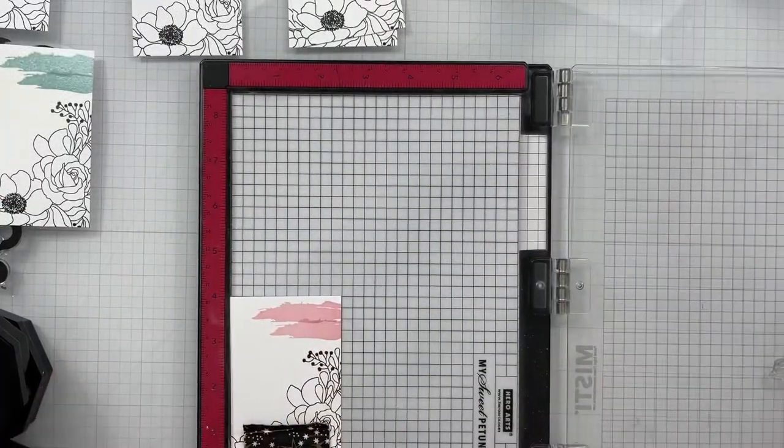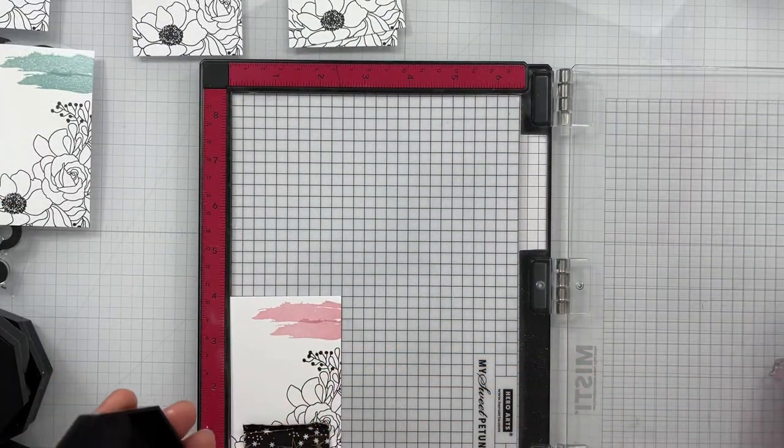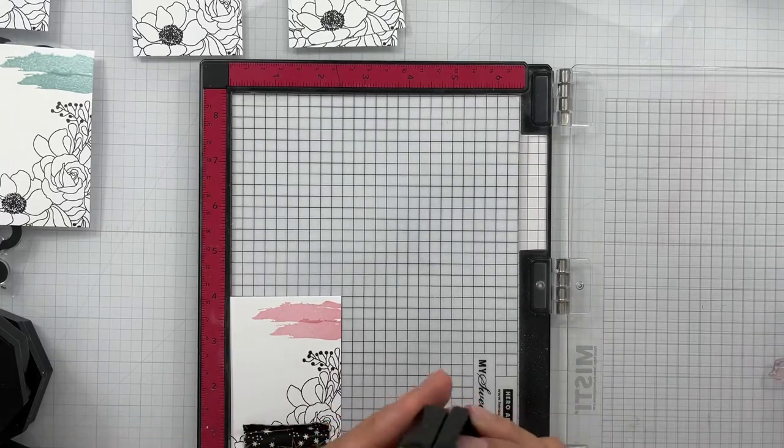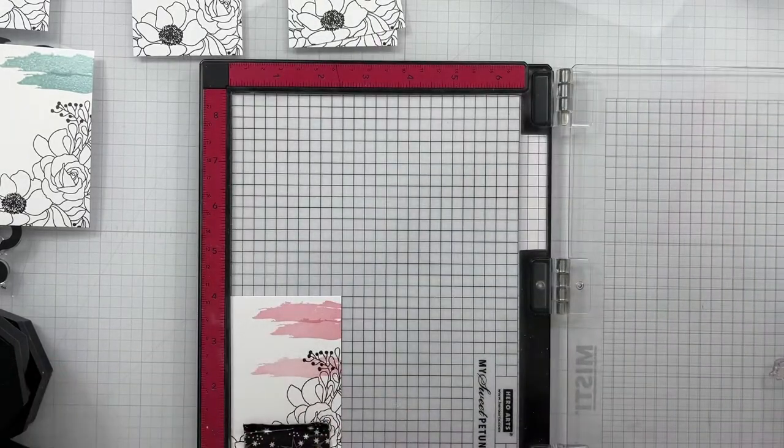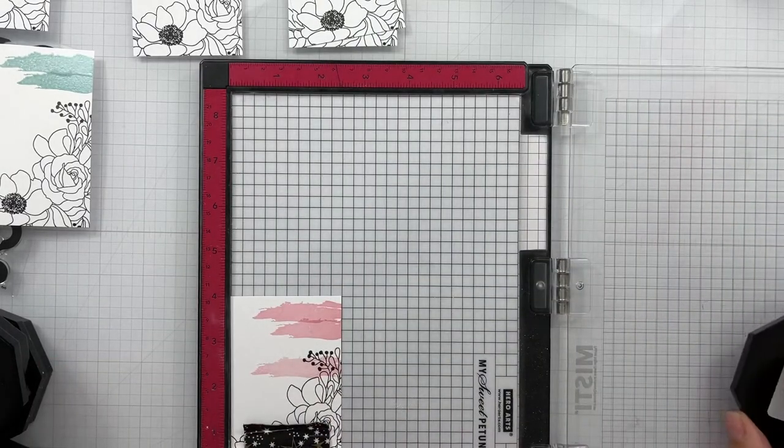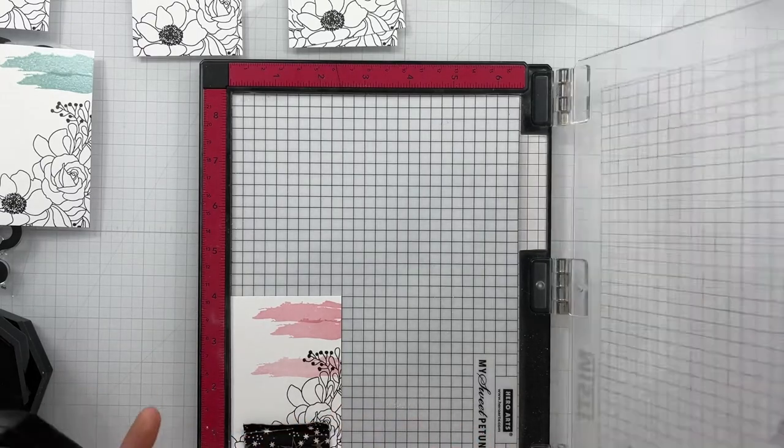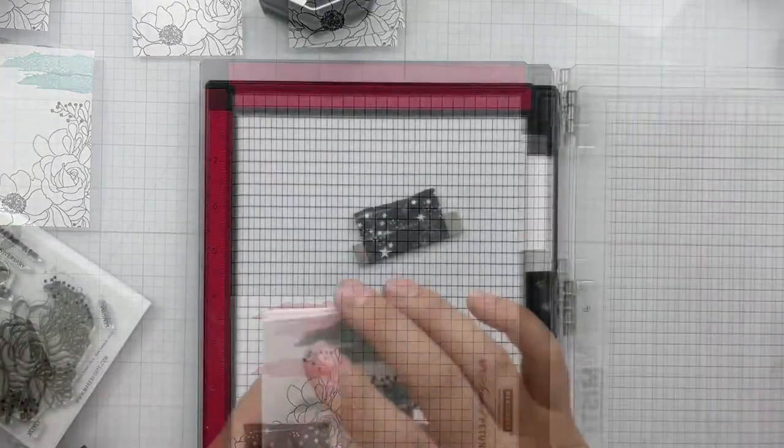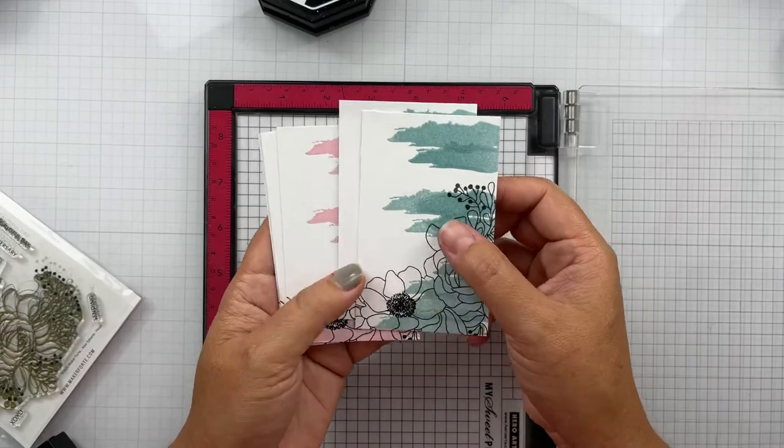I definitely recommend with the embossing glaze to heat underneath first. Let your gun get nice and hot and then start underneath and then go to the top. I found I got a lot smoother result and not so splotchy by really putting that heat gun underneath.